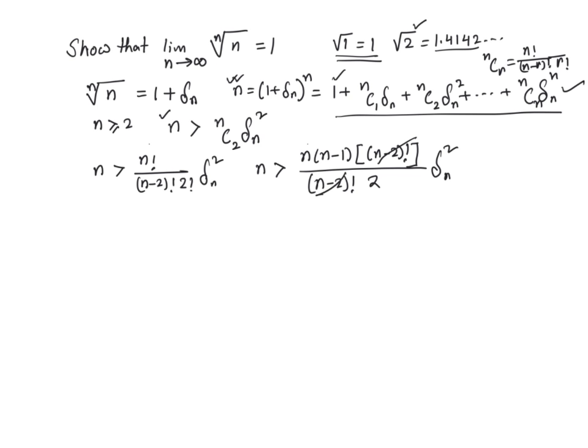Now, this and this is going to cancel out. That's going to give me n is greater than n times n minus 1 divided by 2 times delta sub n whole square.